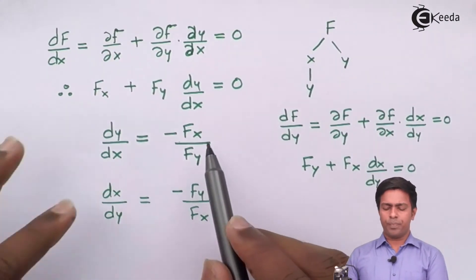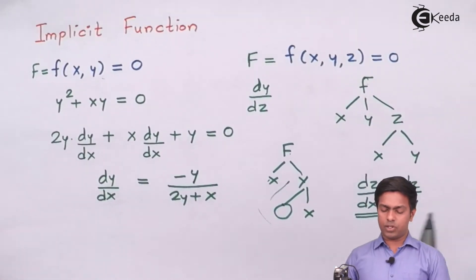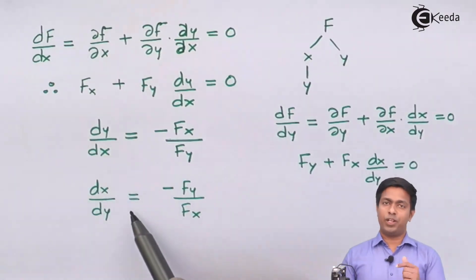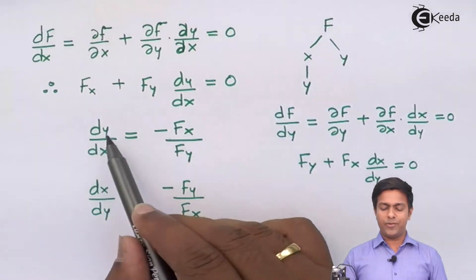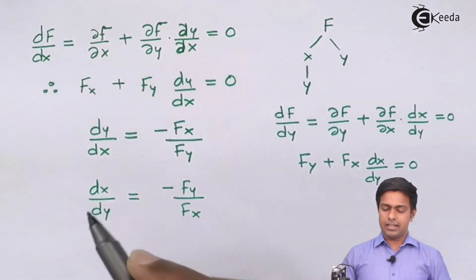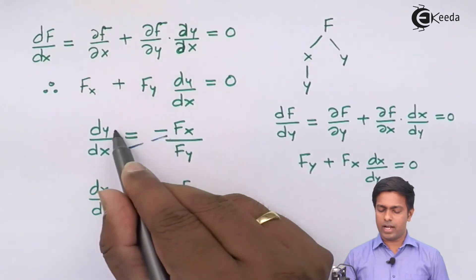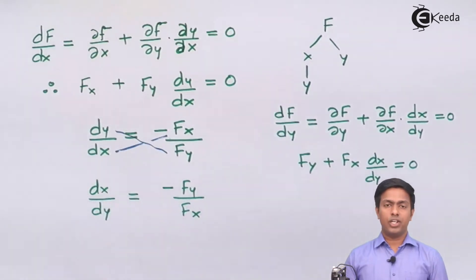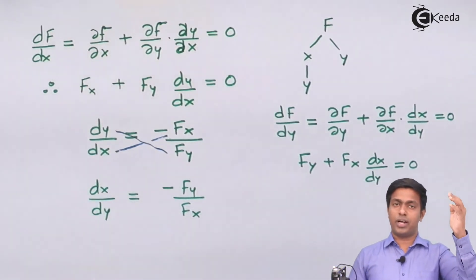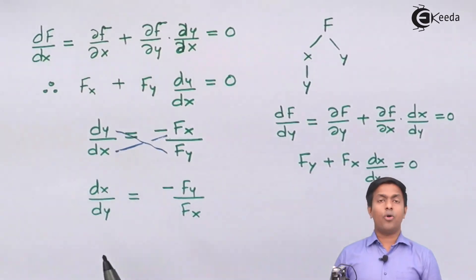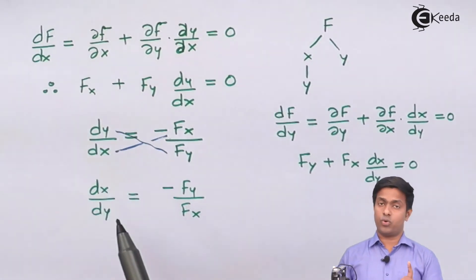To remember these formulas: when finding dy/dx, note that x goes in the numerator (as fx) and y comes in the denominator (as fy), with a negative sign. Conversely, when finding dx/dy, y goes in the numerator and x comes in the denominator — again with a negative sign. So the variable in the numerator of what we're finding moves to the denominator of the formula, and the variable in the denominator moves to the numerator.